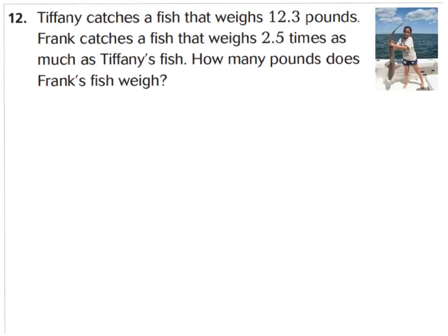Let's do the same thing for number 12. It says Tiffany catches a fish that weighs 12 and 3 tenths of a pound. Let's go ahead and find a spot right below that question where we can just turn that into 12 and 3 tenths, but without our decimal point. Frank catches a fish that weighs 2 and 5 tenths times as much as Tiffany's fish. So I know Frank's fish is going to be heavier because his is 2 and 5 tenths or 2 and a half times as much, so his will be bigger. How many pounds does Frank's fish weigh? Go ahead and set up your equation without your decimal points. We'll put those in at the very end. And then when you have your product, don't forget you need to have two spots to the right of your decimal point. Let's check it when you press pause. Go ahead and press pause now.